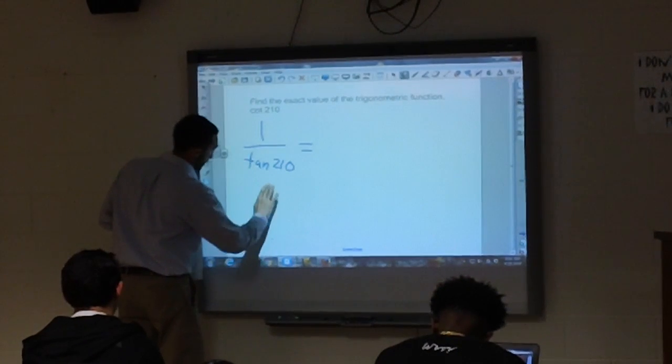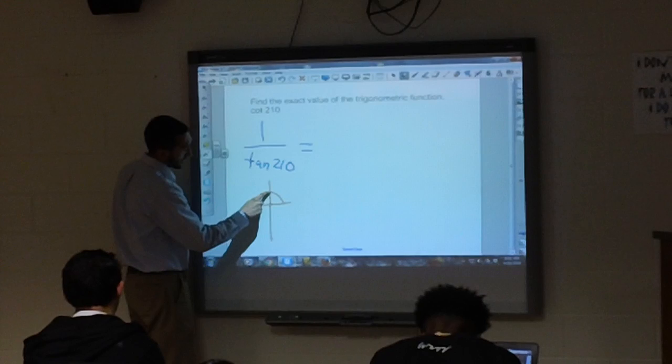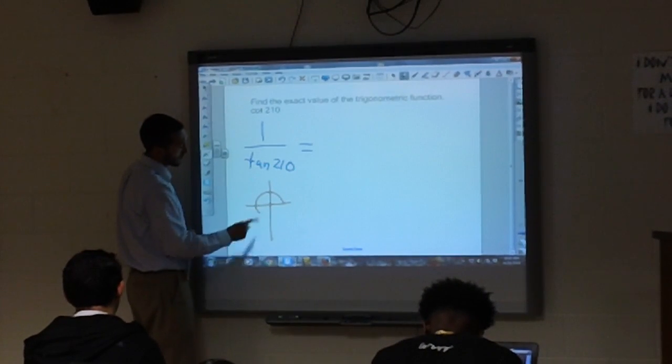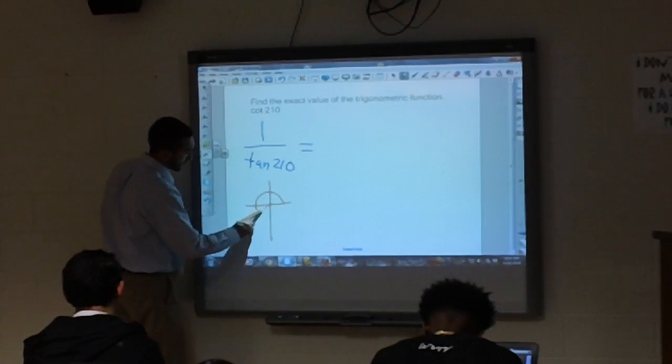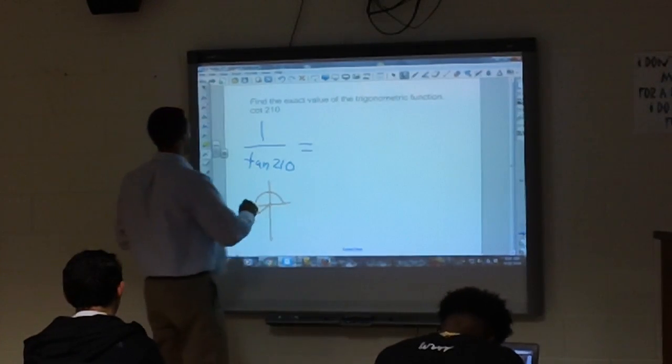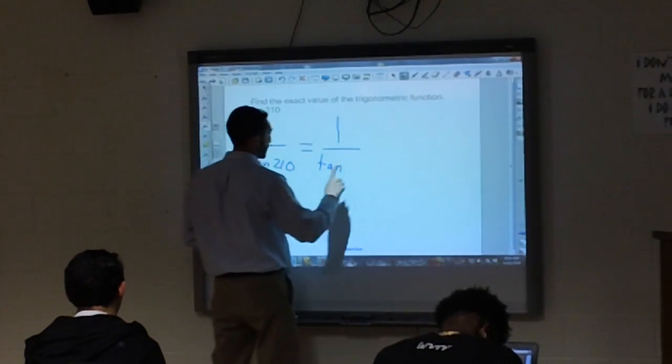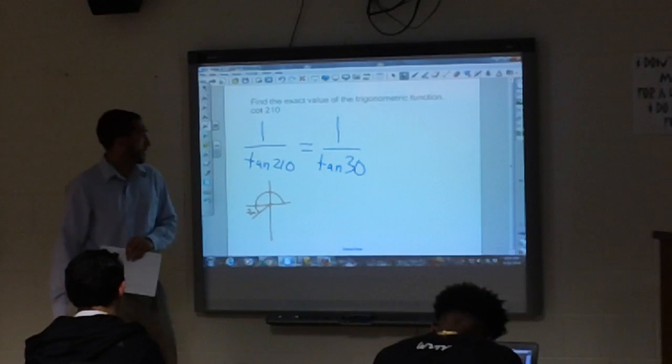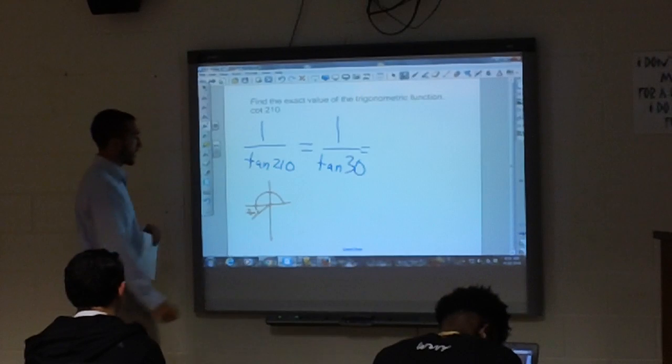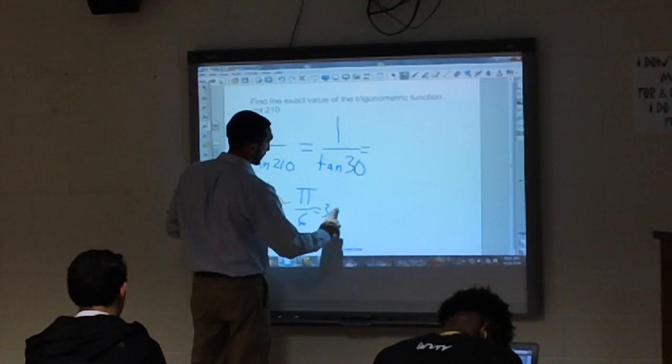So, for anyone that might be confused, tangent of 210 degrees. Remember, this is 90, all the way back to the x-axis is 180, and it's just a little bit past 180. So my reference angle is 30 degrees. So that means I really want to take 1 over tangent of 30 degrees. And that's the same as pi over 6, right? Because pi is 180, so pi over 6 will be the same as 30 degrees.